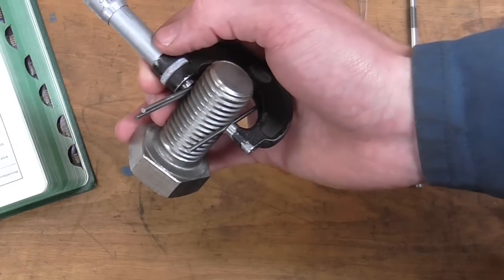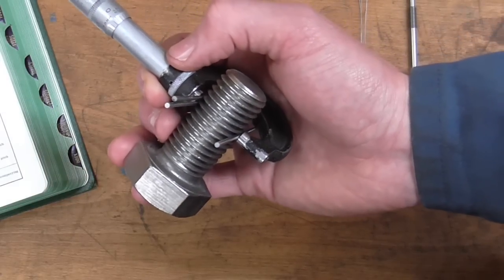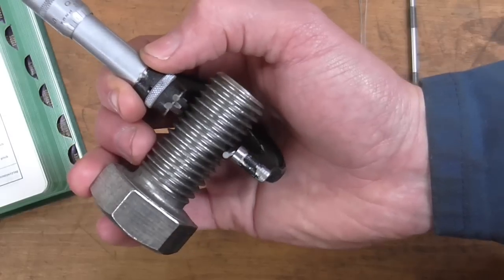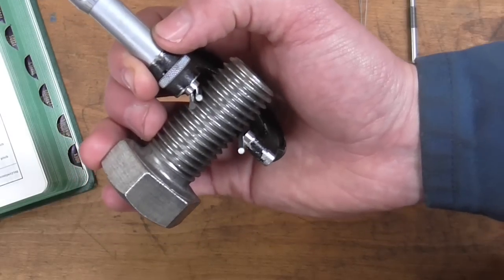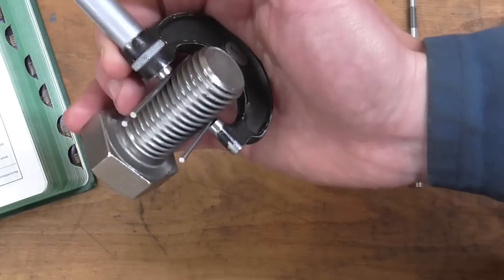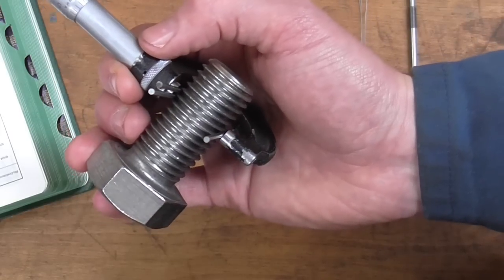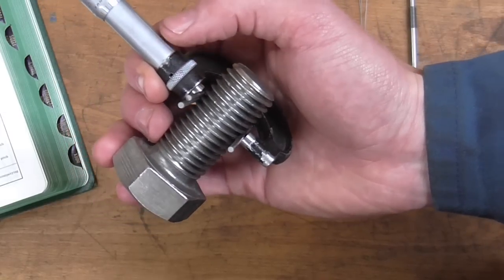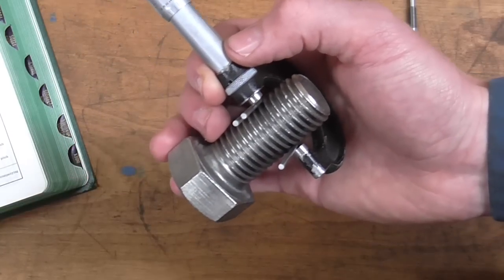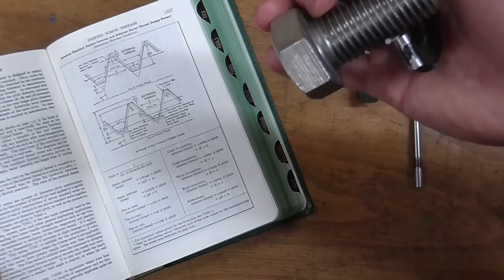Moving on. In my video I showed the checking of a thread size by means of measuring over wires. What I've actually got here is three cylindrical gauge pins sat within the thread form, and combined with the use of a micrometer, this allows me to check what is referred to as the pitch diameter. It's my preferred way of checking external threads, and you can read all about it in your machinery's handbook.